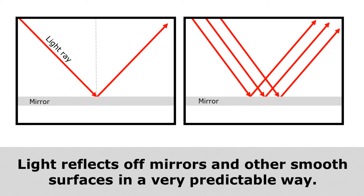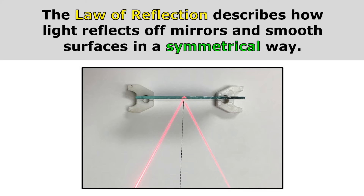Light reflects off mirrors and other smooth surfaces in a very predictable way. The law of reflection describes how light reflects off mirrors and smooth surfaces in a symmetrical way. You can see that here in this picture — the laser beam is reflecting off this mirror in a symmetrical way.